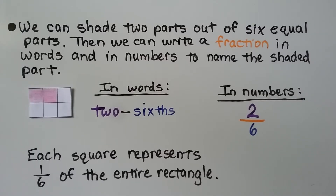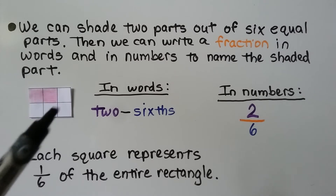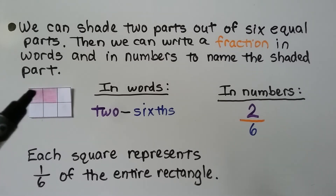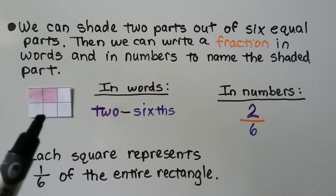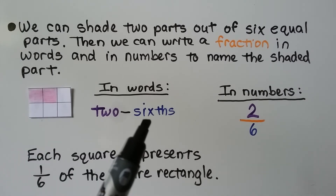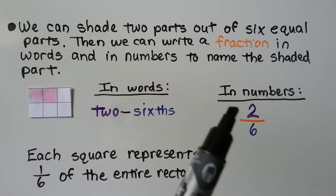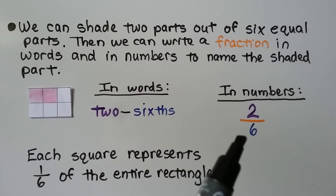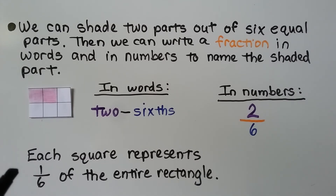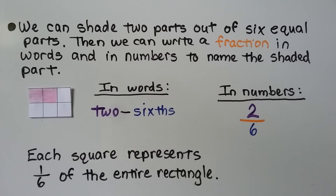We can shade two parts out of six equal parts, then write a fraction in words and in numbers to name the shaded part. Here we have a rectangle with six equal parts. We shade two of the equal parts pink, and we can write it in words: two-sixths. In numbers, we write a two for the numerator for the two shaded parts, and a six for the denominator for how many parts there are altogether. Each square represents one-sixth of the entire rectangle, so one-sixth and one-sixth gives us two-sixths.